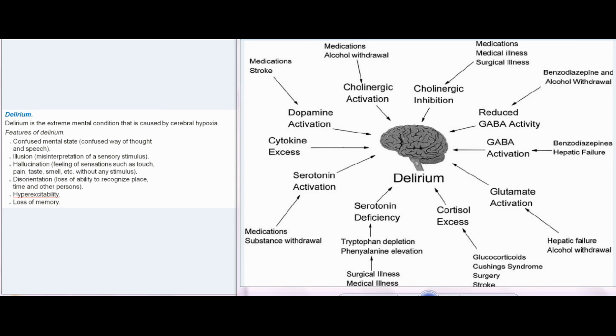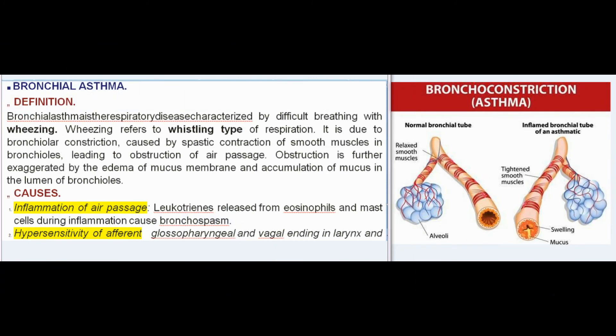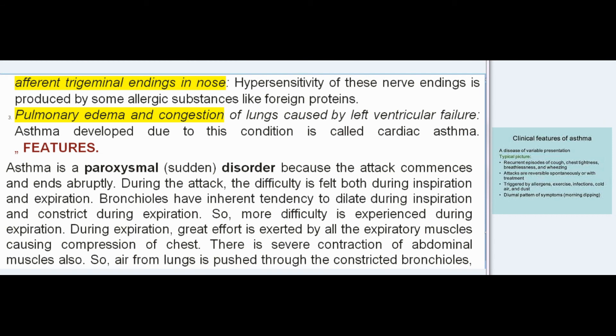Bronchial asthma is a respiratory disease characterized by difficult breathing with wheezing — a whistling type of respiration. It is due to bronchiolar constriction caused by spastic contraction of smooth muscles in bronchioles, leading to obstruction of the air passage. Obstruction is further exaggerated by edema of the mucous membrane and accumulation of mucus in the lumen of bronchioles. Causes include inflammation of the air passage (leukotrienes released from eosinophils and mast cells cause bronchospasm), hypersensitivity of afferent nerve endings due to allergic substances like foreign proteins, and pulmonary edema and congestion caused by left ventricular failure (cardiac asthma).